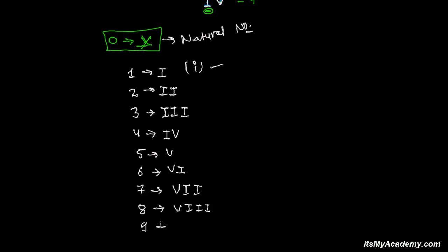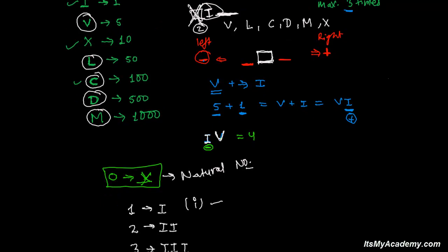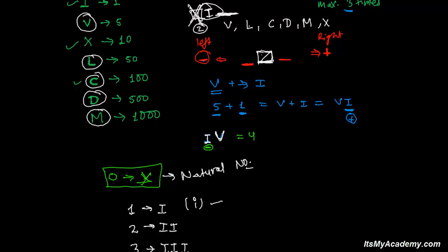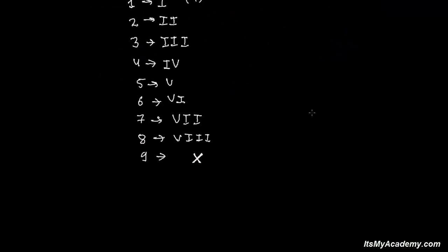Now for nine, if I add one more I after VIII, you might think it's eight — but no, we cannot write I four times. So for nine, we use X which means 10. Writing I on the left side of X means subtracting one — so IX means nine. And ten is simply X.